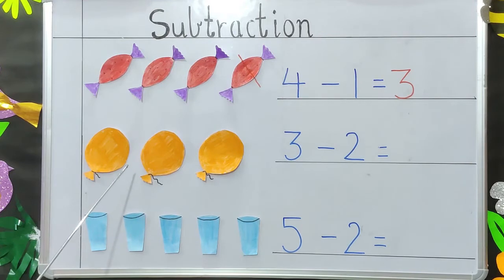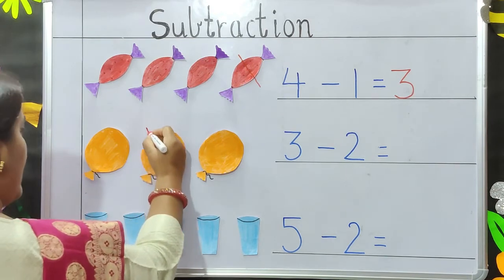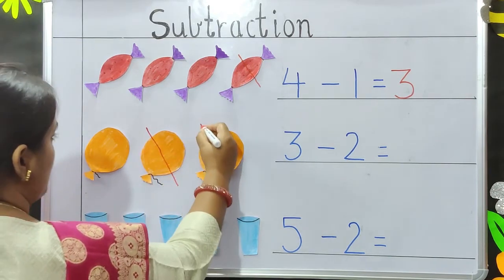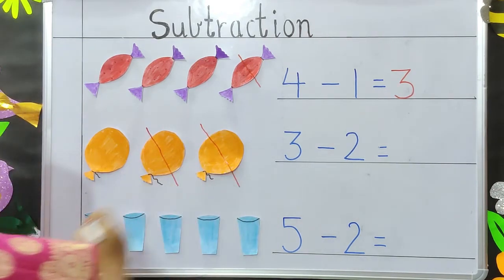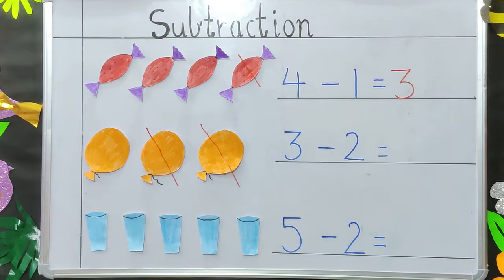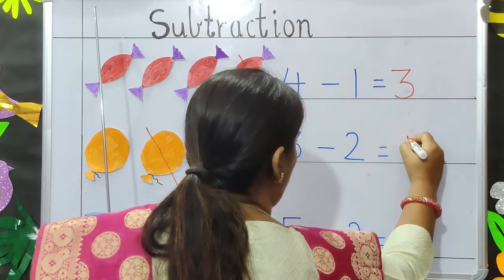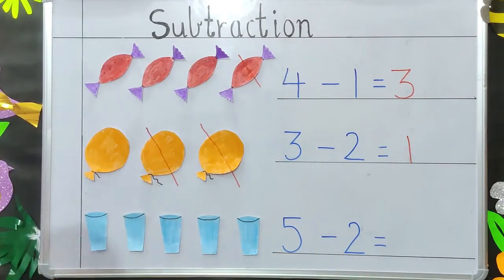Now, in the next question, if you have three balloons and two of the balloons fly away in the air, so how many balloons will be left with you, children? Yes, you will have only one balloon left with you. So, 3 minus 2 will be 1.